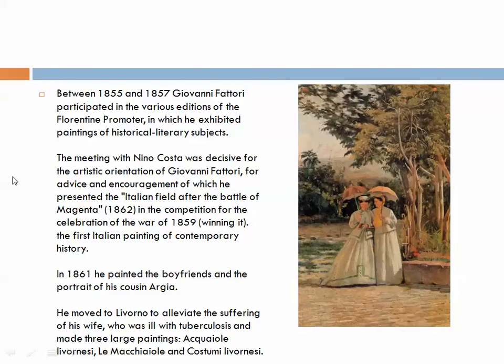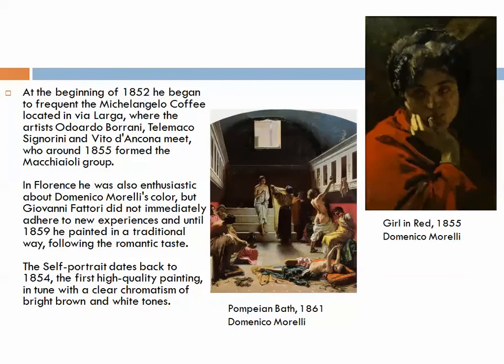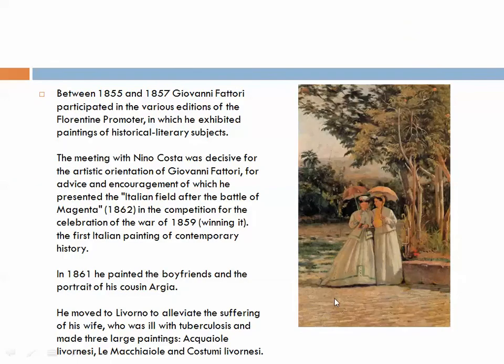Between 1855 and 1857 he participated in various editions of the Florentine Promoter, in which he exhibited paintings of historical and literary subjects — most likely again inspired by Morelli, as these subjects were usually a reference to neoclassicism. He also had an important meeting with Nino Costa, who was a great inspiration for the artistic orientation of Fattori and wanted to encourage him to carry Italian Realism to the next level.